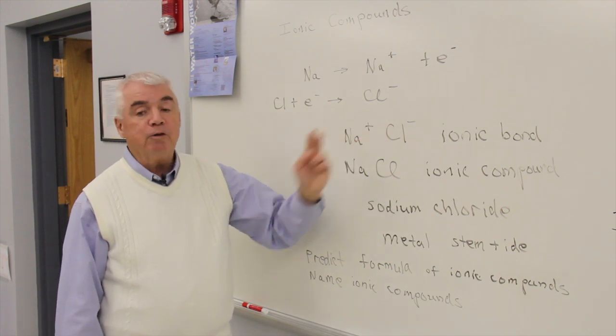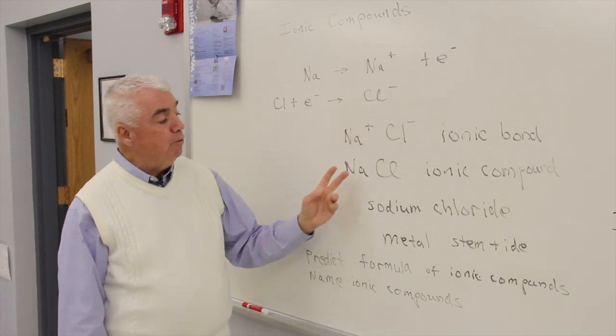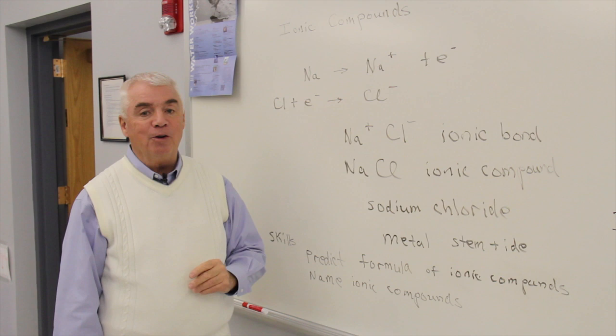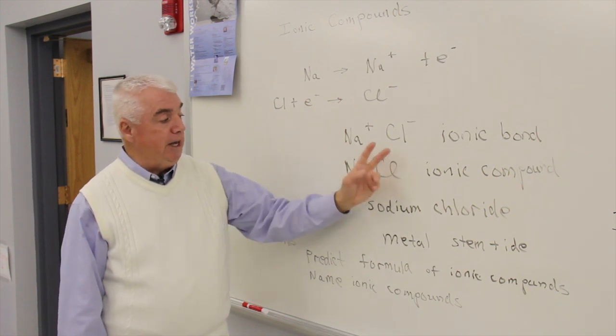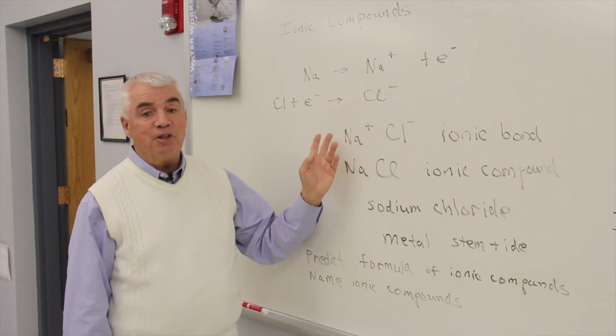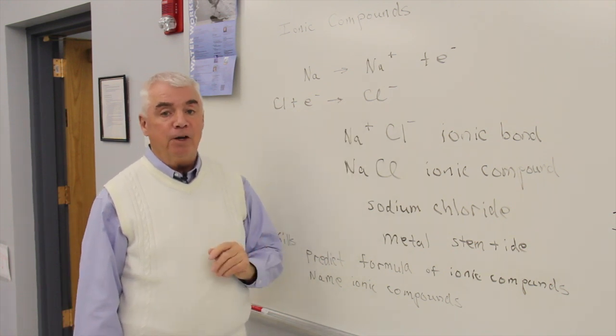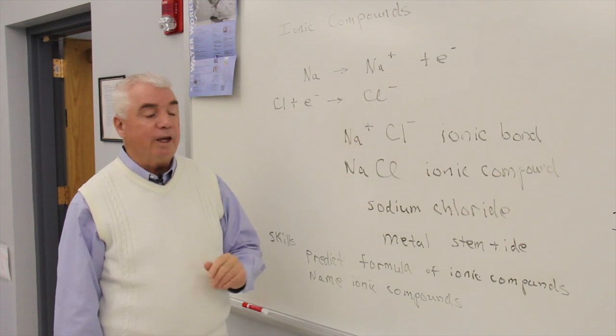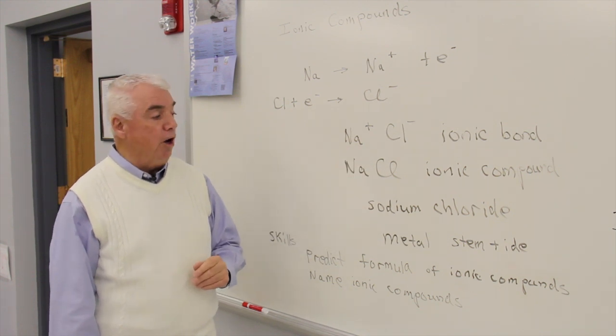We've transferred one electron, and whenever we form an ionic compound, that'll always be the case that the number of electrons has to balance. That is to say, the number given up and the number taken on have to be equal. We can't create or destroy electrons.